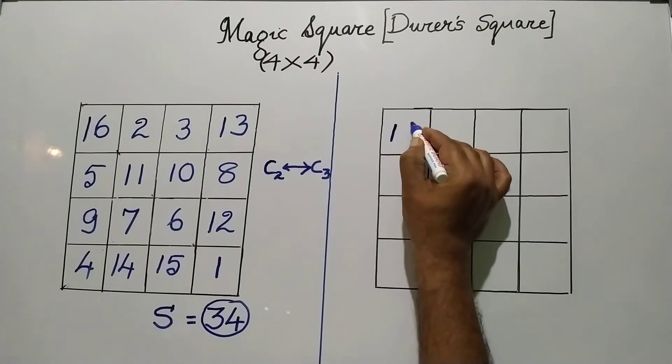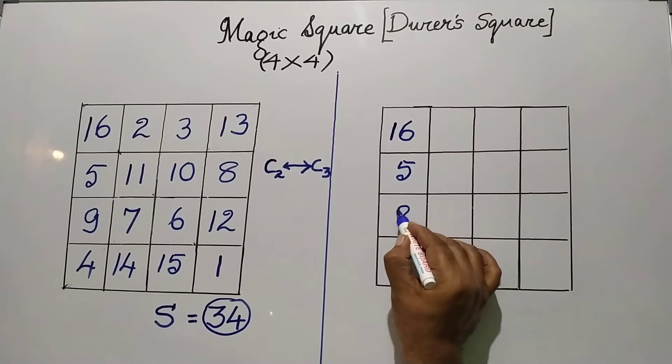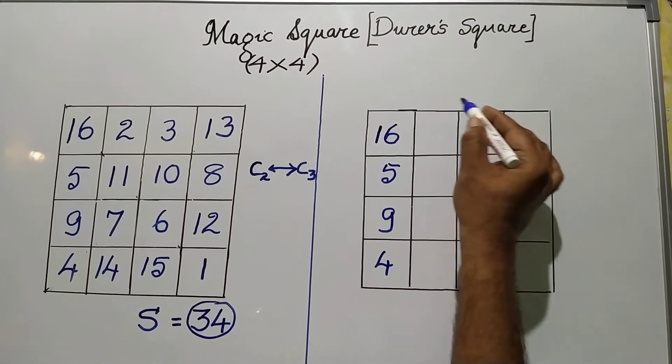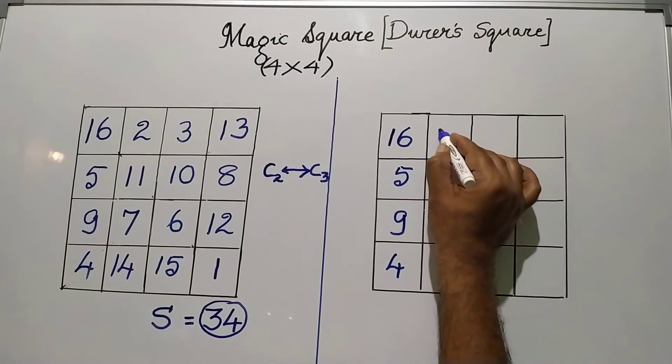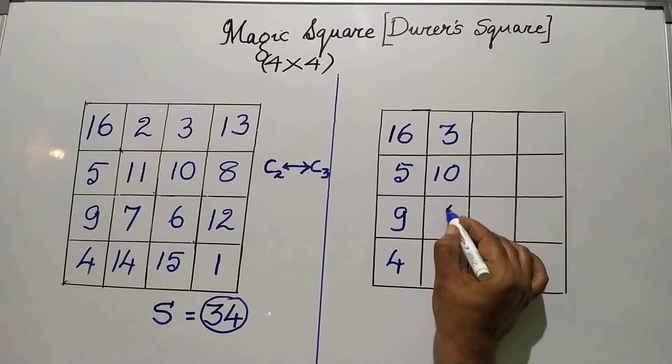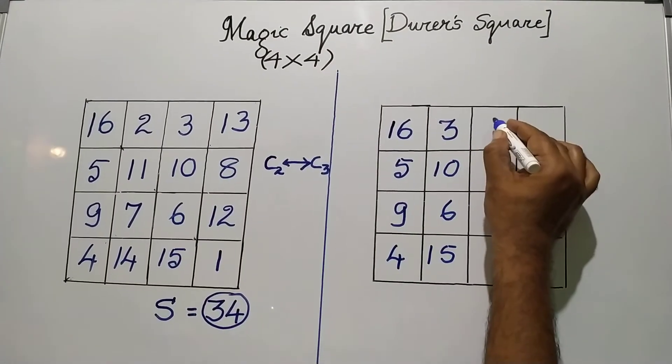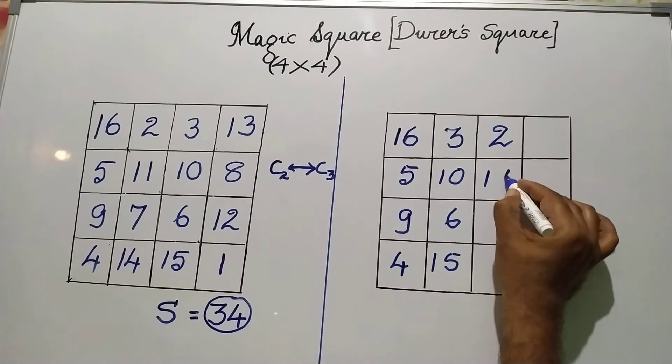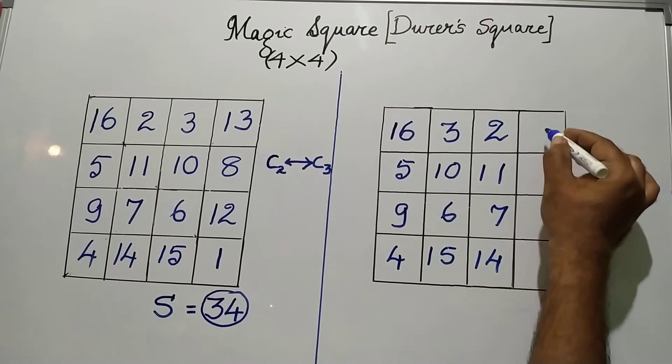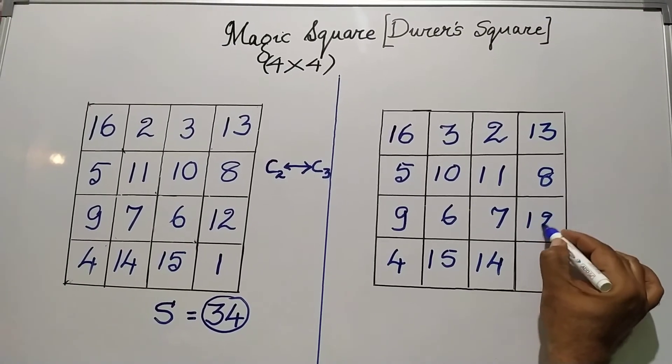The first column is retained as it is. 16, 5, 9 and 4. The second column and the third column are interchanged. So instead of second, I am writing the third. 3, 10, 6 and 15. Instead of the third, I will write the second. That will be 2, 11, 7 and 14. And the last column is retained as this. 13, 8, 12 and 1.